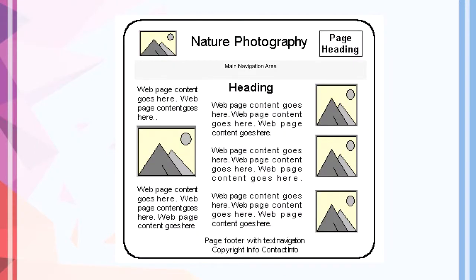This is a sample layout of a wireframe for a web page design, showing sections for the web page such as the page heading, the main navigational area, the heading part, and content for the web page. The final parts are the page footer and the copyright section. The location of images and tags are also identified in the wireframe.